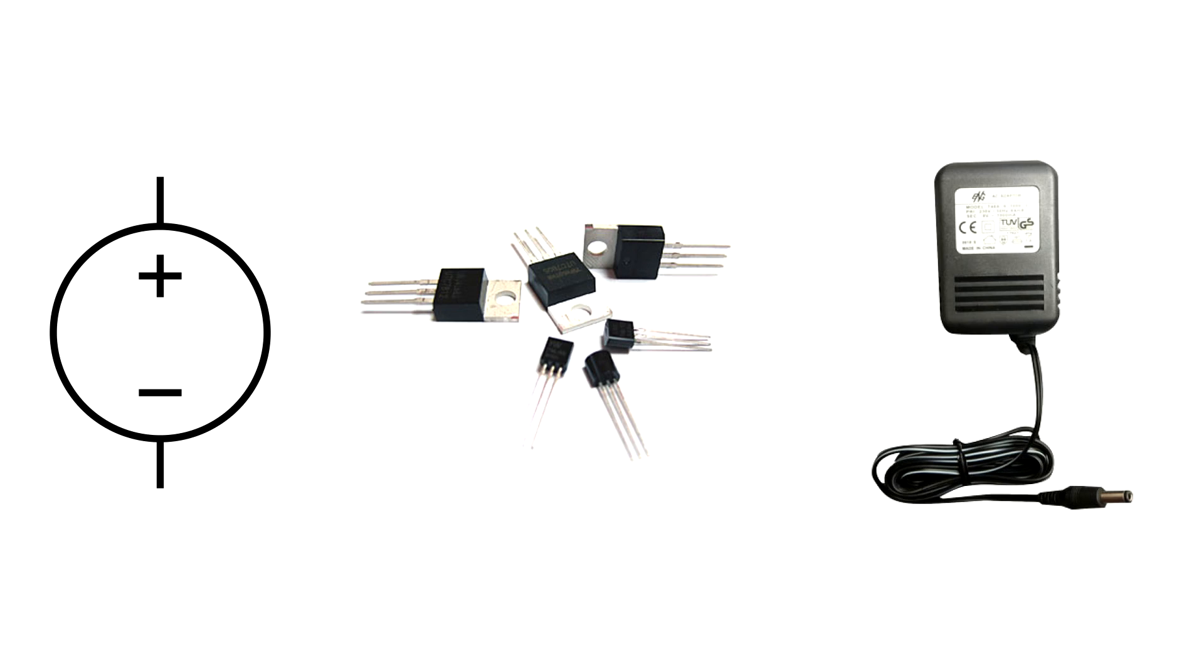Most of the time in electronics you'll find yourself working with constant voltage sources. Wallworts, voltage regulators, and other types of power supplies can all have small variations in voltage, but they're basically constant voltage sources. So, what's a constant current source?